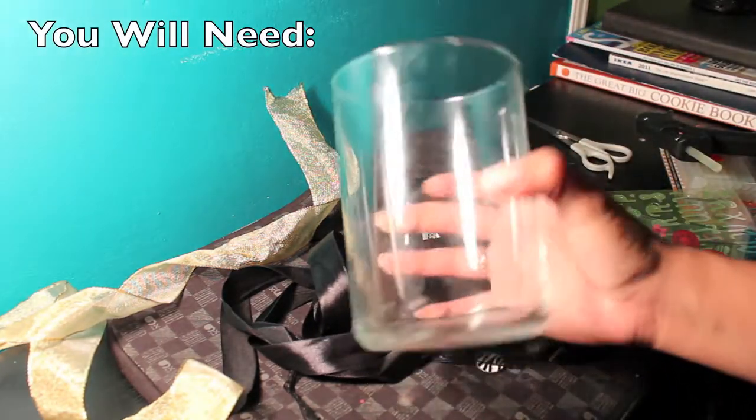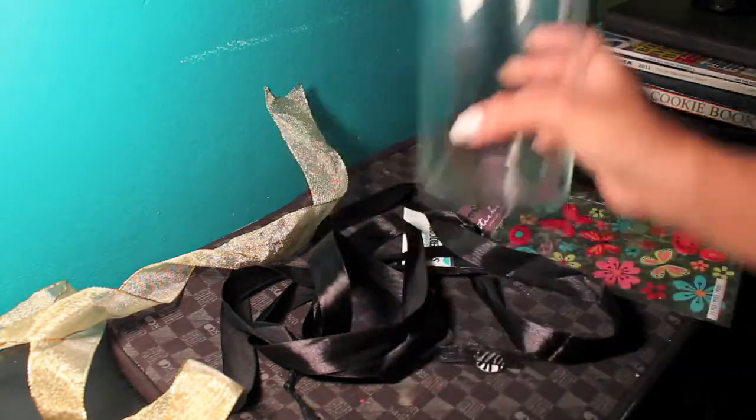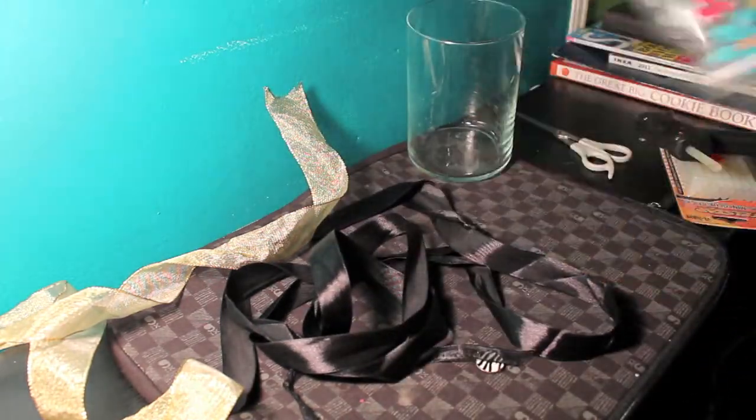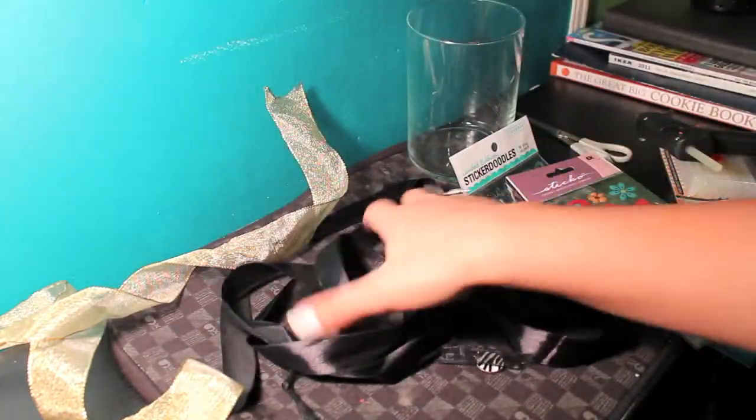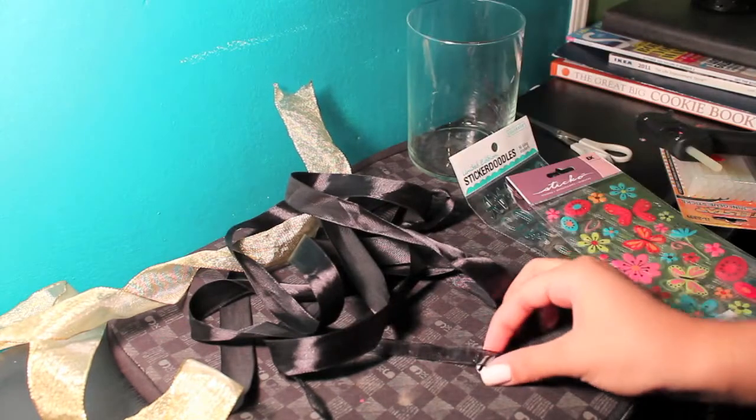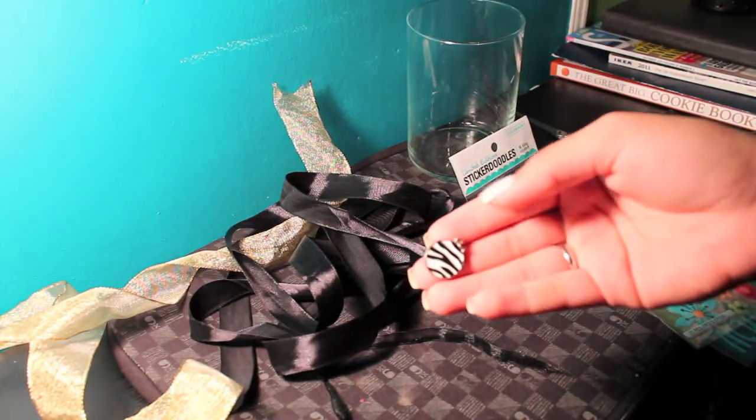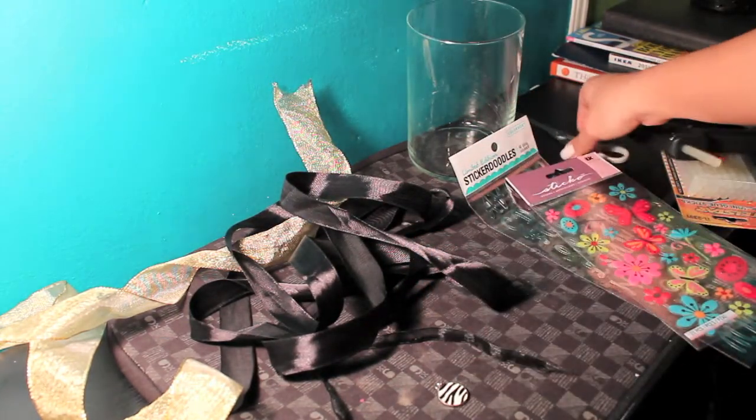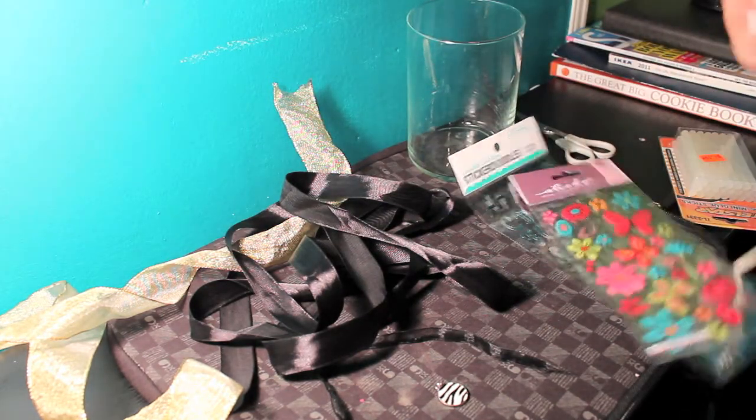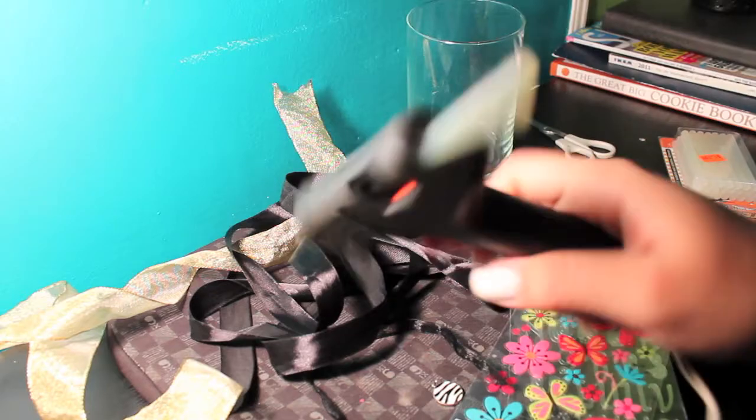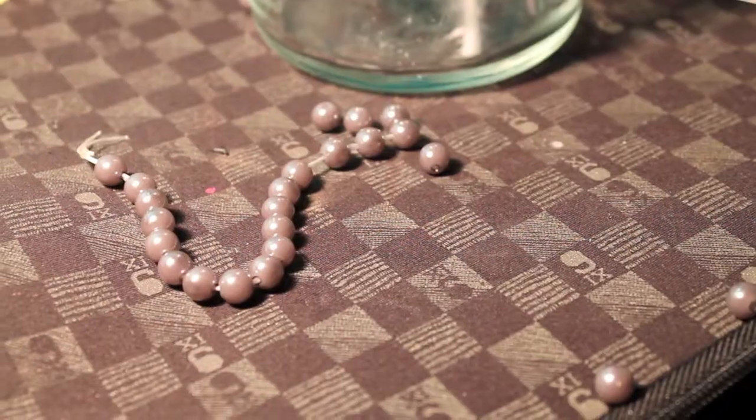An empty vase like this one. Some stickers. These were from Target and they only cost me $1 each. A few ribbons, any color, a pin that I got from a necklace, scissors to cut anything that you will need, and of course a glue gun. And some beads.